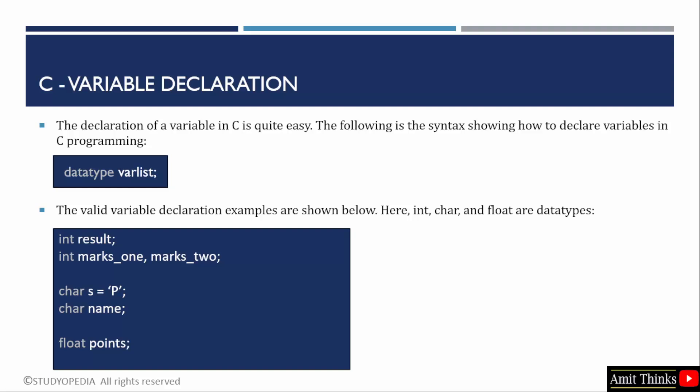int result - here int is the data type and result is the variable. The next one includes varlist example, that means multiple variables in a single line. We mentioned the int data type, then two variables in a single line: marks_1 and marks_2. These were integers. Marks is an integer, so the int data type.